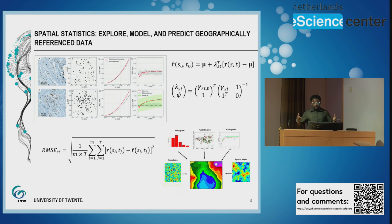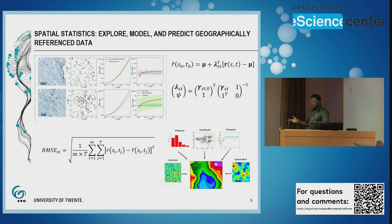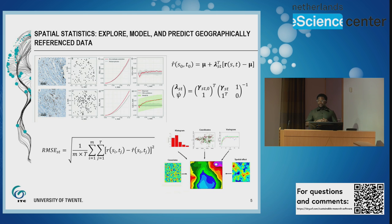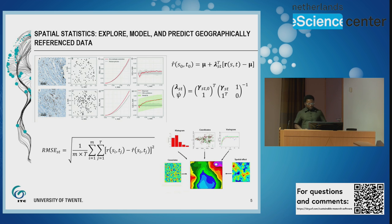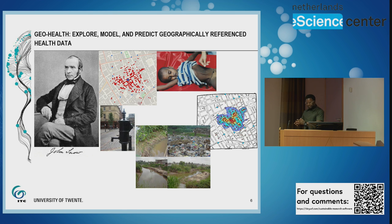In spatial statistics, we explore, model, and predict geographically referenced data using a lot of statistics and simulations. Spatial data comes in different forms — in terms of representation we have points, lines, and polygons, which are the common geographic feature representations. But we are much more interested in the processes: geostatistical processes, point pattern processes, or lattice processes — the methods vary depending on the kind of process you intend to deal with.